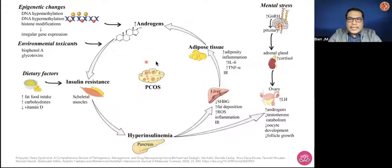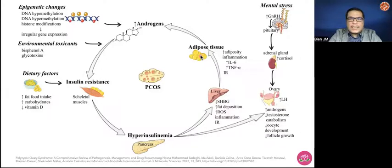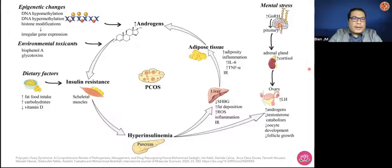In this summarized scheme of the pathophysiology of PCOS, we see both external as well as internal factors that contribute to metabolic changes. You have epigenetic changes — inheritable alterations in the genome and gene expression without any changes in the gene sequence. There may be DNA hypo- and hypermethylation that can cause irregular gene expression, potentially increasing androgen secretion. There's also a hypothesis that environmental toxins such as BPAs or bisphenol A and glycotoxins or advanced glycated end products can induce endocrine disruptions.